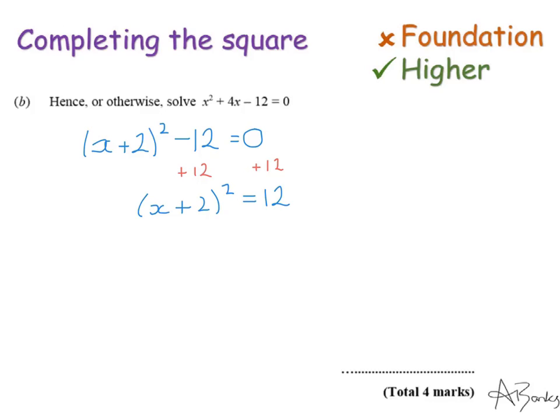Because this is x plus 2 all squared here, I'm going to need to square root first to get rid of the square. So I'm going to square root both sides. This will leave me with x plus 2 equals the square root of 12.